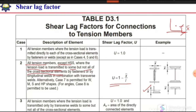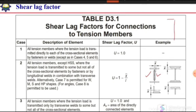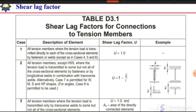In case of a W section, T section, or S section, it is more complicated. If the web is connected, the centroid of the section lies inside the web. In that case, we consider it as a channel section — two channel sections — and determine the centroid of that channel. The distance from this centroid up to the load transfer plane is termed x-bar.